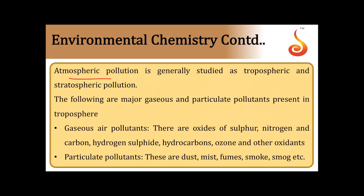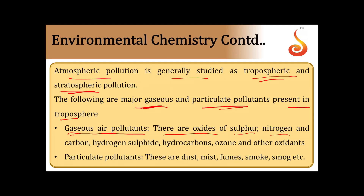Atmospheric pollution is generally studied as tropospheric and stratospheric pollution. The major gaseous air pollutants present in the troposphere are oxides of sulfur, oxides of nitrogen, oxides of carbon, hydrogen sulfide, hydrocarbons, ozone, and other oxidants. Particulate pollutants include dust, mist, fumes, smoke, and smog.